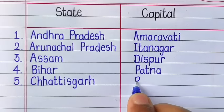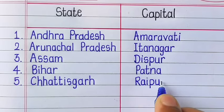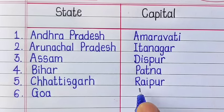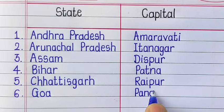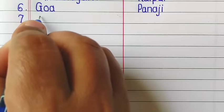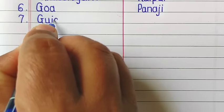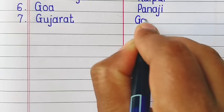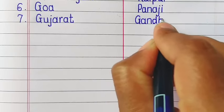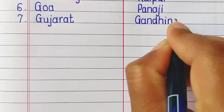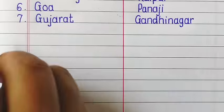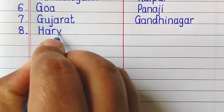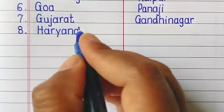Chhattisgarh — Raipur. Goa — Panaji. Gujarat — Gandhinagar.